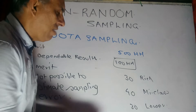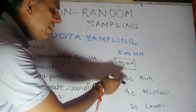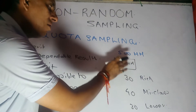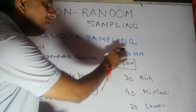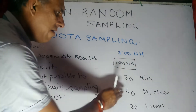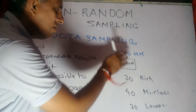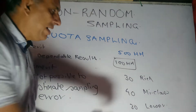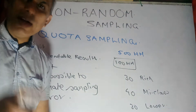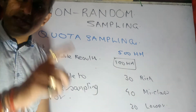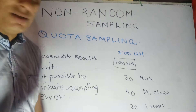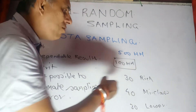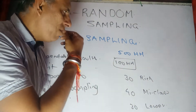These 100 households are taken on the basis of their percentage representation. If I have taken 30 out of 100, that means 30 percent of all 500 households are rich, and 40 percent of all 500 households are middle class, so I have taken 40 accordingly.